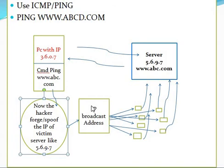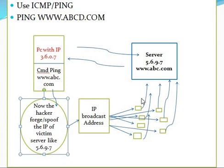To summarize: an echo request or ping request is broadcast to all hosts on the network. From the victim's perspective, the requests appear to come from the victim's own system, creating a loop — because the spoofed IP matches the server's IP, so responses keep being sent back to the same server repeatedly.